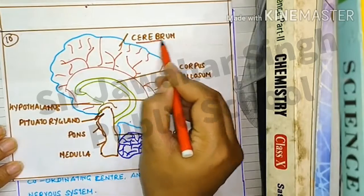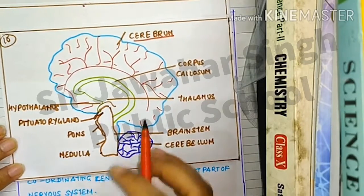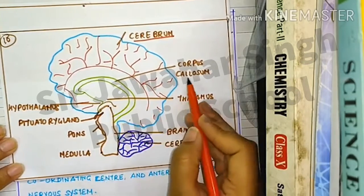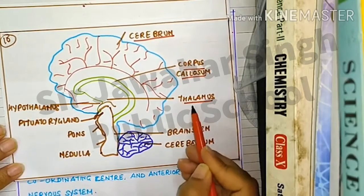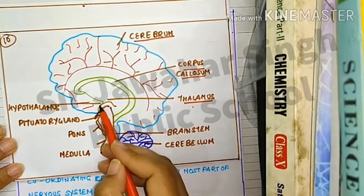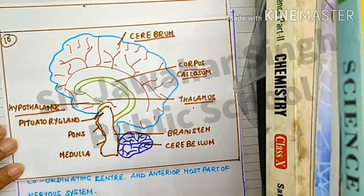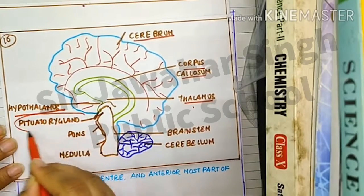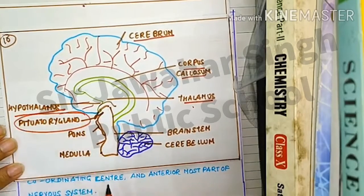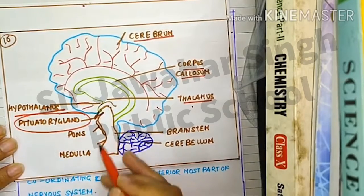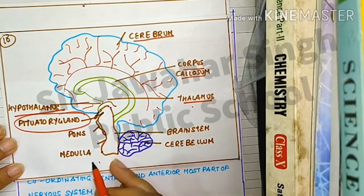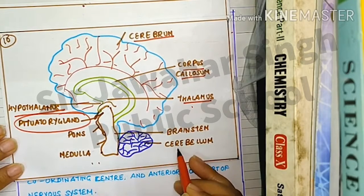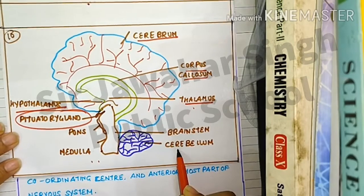We have the largest part known as cerebrum. Then we have the corpus callosum, which is a part of the midbrain. Then we have the thalamus, and just below the thalamus we have the hypothalamus. The master gland is known as the pituitary gland. The parts of the hindbrain are pons varuli, medulla oblongata, and cerebellum, also known as the little brain.